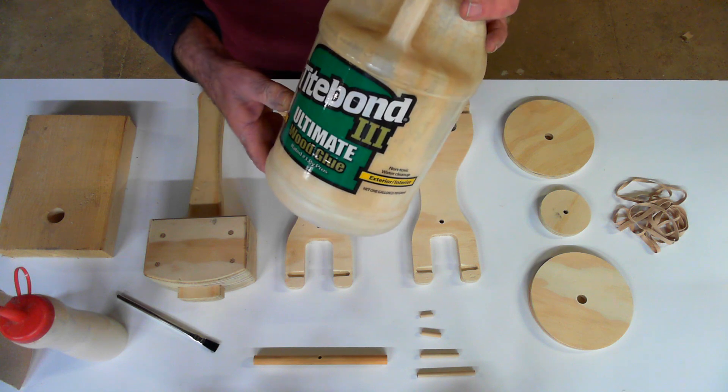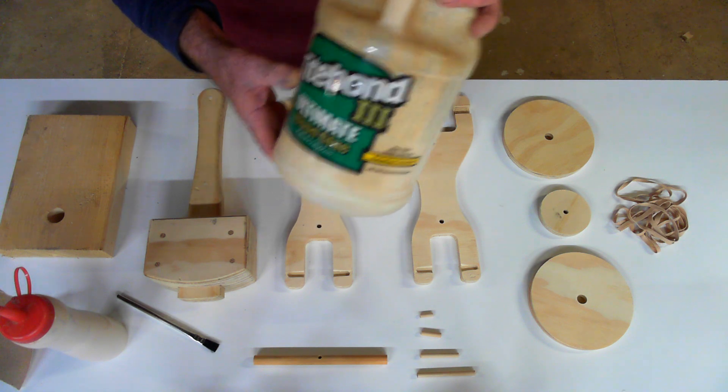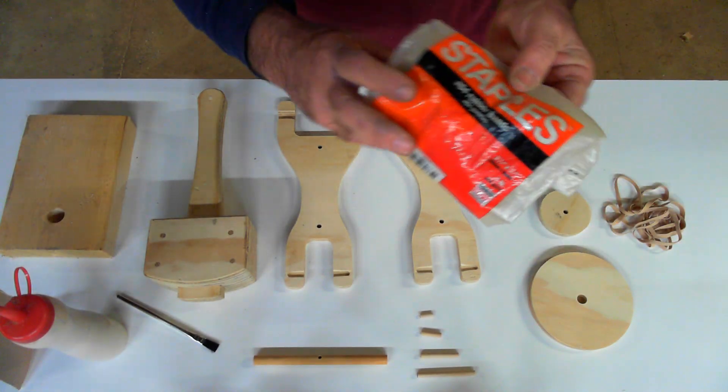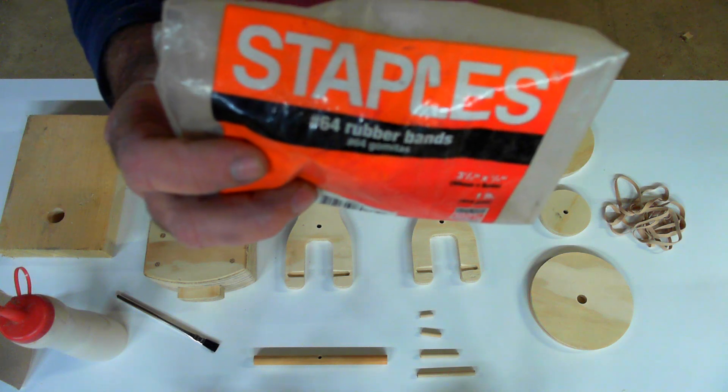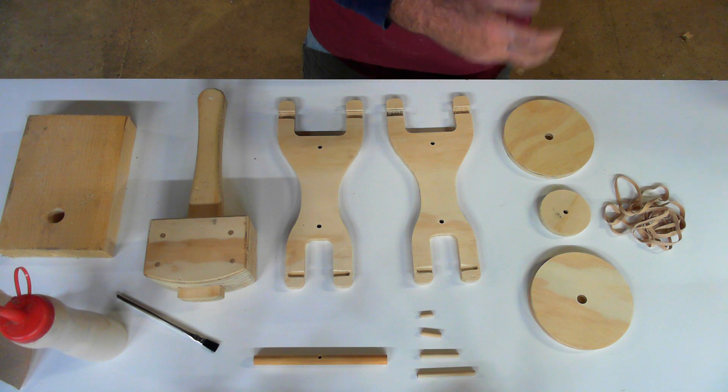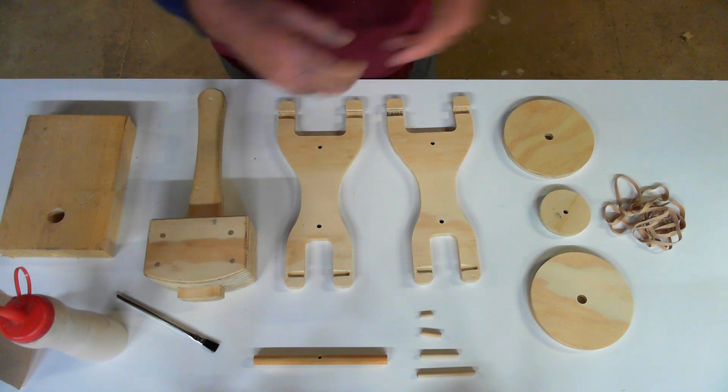You're going to need some Apollo rubber bands. I use these number 64 rubber bands. You can get them at an office supply place. They work real well. They're good at office supply places because they're usually pretty fresh. They sell a lot of them. When they get old, they get brittle.